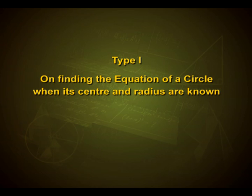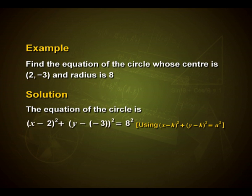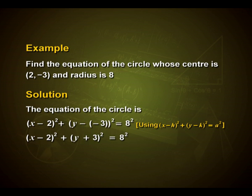Now let us discuss some examples. In Type 1 examples, we find the equation of a circle when its center and radius are known. Find the equation of a circle whose center is (2, -3) and radius is 8. The equation is (x - 2)² + (y + 3)² = 8², which on simplification gives x² + y² - 4x + 6y - 51 = 0.